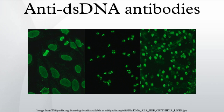The first evidence for anti-nuclear antibodies arose in 1948 when Hargraves, Richmond and Morton discovered the LE cell. These abnormal cells, found in the bone marrow of persons who have SLE, are categorized as polymorphonuclear leukocytes with phagocytosed whole nuclei. Subsequently in 1957, antibodies to dsDNA were the first autoantibodies to be identified in patients with SLE.